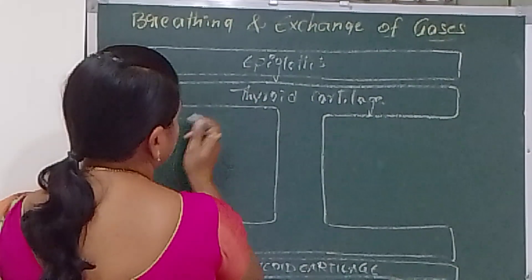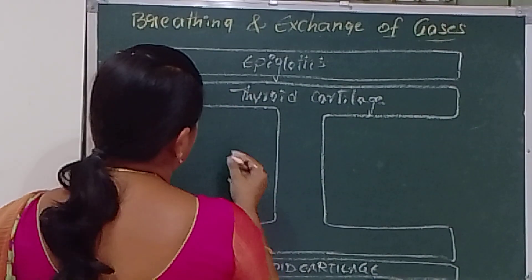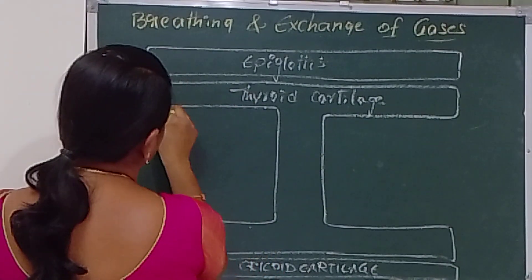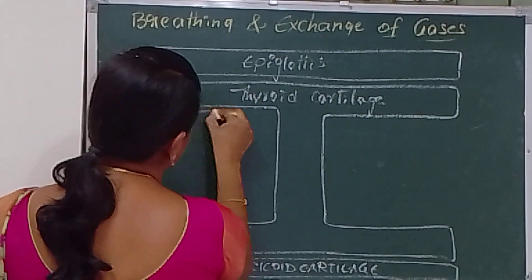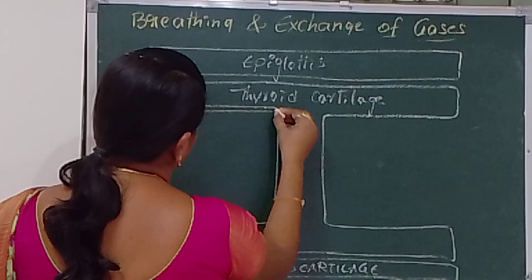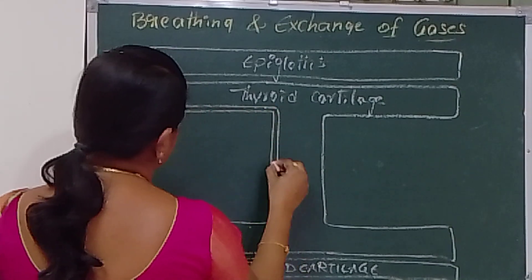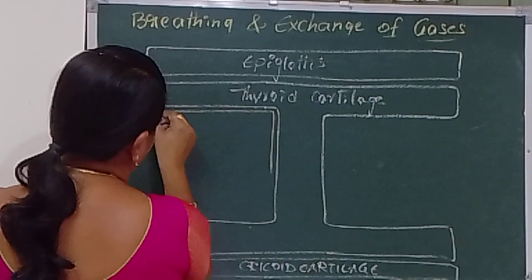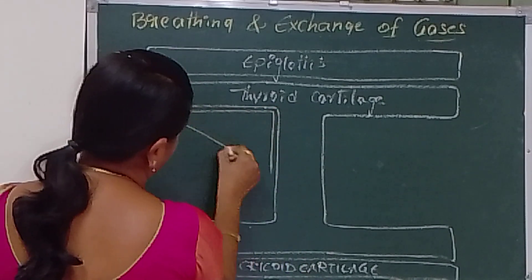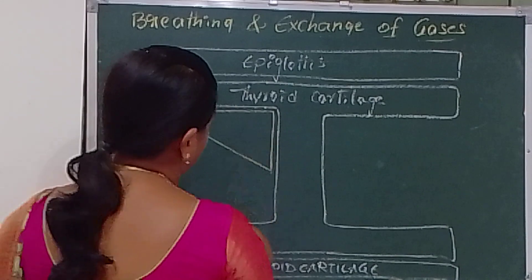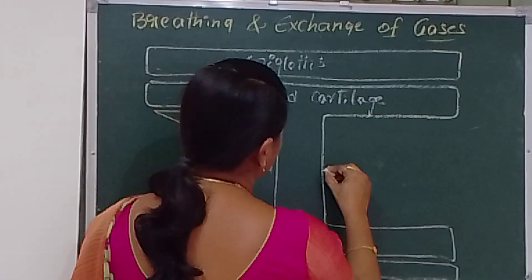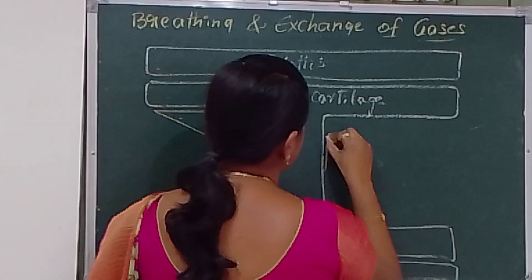Below the thyroid cartilage, on the lateral sides, a triangular-shaped arytenoid cartilage is present.